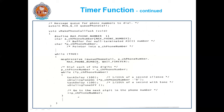Once some phone number has been received in the message queue, the starting address of that phone number — say 10 digits — will be given to your pointer variable. Now, all 10 digits must be dialed. Each digit must be dialed for one-tenth of a second, then silence must be maintained for one-tenth of a second, then the next digit. This should be done for all digits of the phone number.